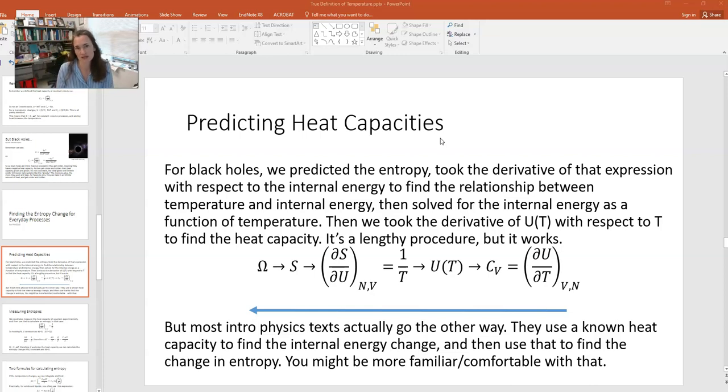Now it's interesting that this was our approach because most introductory physics texts actually go the other way. What they do is they take a known heat capacity and then they say this system went through some kind of process or temperature change, and then they use that to get an internal energy which is then used to calculate a change in an entropy.